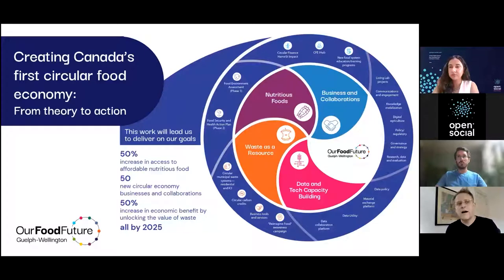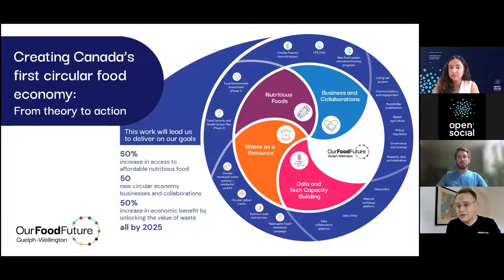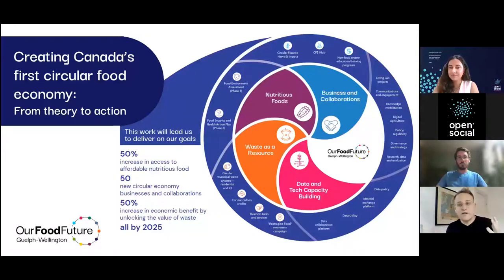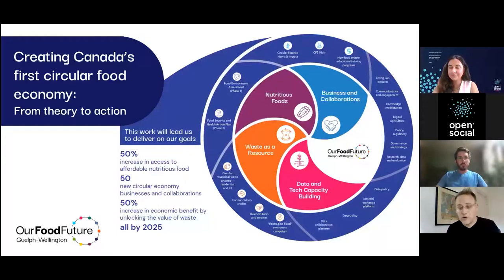It's a very big project. We have about 150 collaborators inside the tent and many more broadly involved across our community. When you look at these three big goals, each work stream is led by a different organization — Nutritious Food is led by our public health unit, and Business and Collaboration are led by local innovation clusters. It's bringing together a lot of stakeholders.